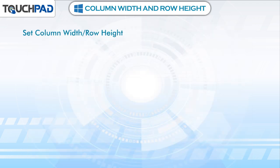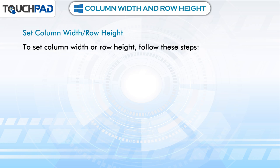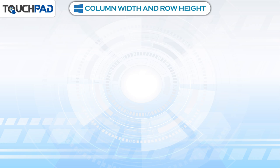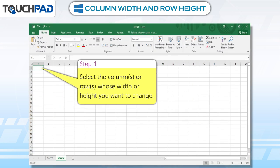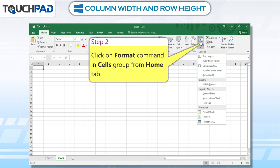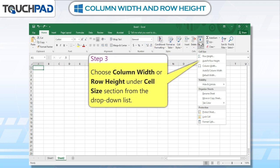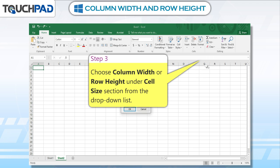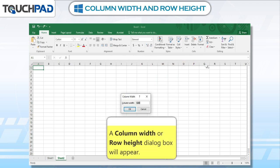Set Column Width / Row Height. To set column width or row height, follow these steps. Step 1: Select the column or row whose width or height you want to change. Step 2: Click on the Format command in the Cells group from the Home tab. Step 3: Choose Column Width or Row Height under the Cell Size section from the drop-down list. A Column Width or Row Height dialog box will appear.